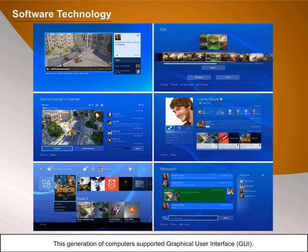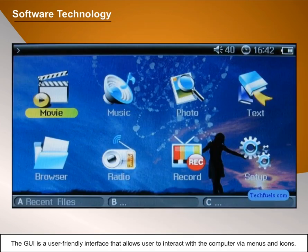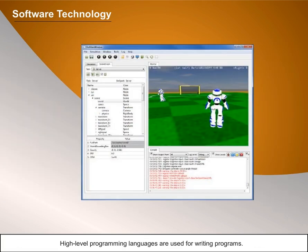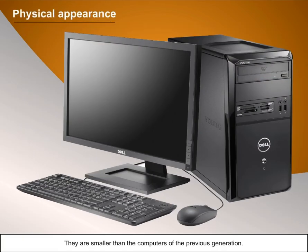This generation of computers supported a graphical user interface (GUI). The GUI is a user-friendly interface that allows users to interact with a computer via menus and icons. High-level programming languages are used for writing programs.